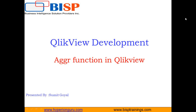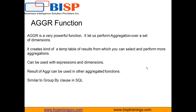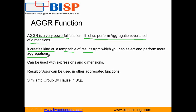The AGGR function is a very powerful function that lets us perform aggregations over a set of dimensions. It creates a kind of temporary table of results from which you can select and perform more aggregations. By using the AGGR function, a temporary table will be created after the calculations.